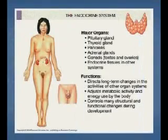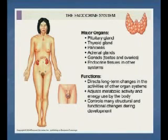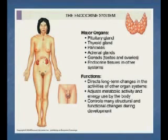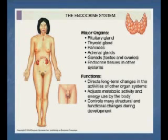The endocrine system is a very important system in the human body. Significant organs related to it include the pituitary gland, thyroid gland, pancreas, adrenal gland, the gonads — testicles and ovaries — and endocrine tissue in other systems. Its functions include directing long-term changes in the activities of other organ systems, regulating metabolic activity and energy used by the body, and controlling many structural and functional changes during development.